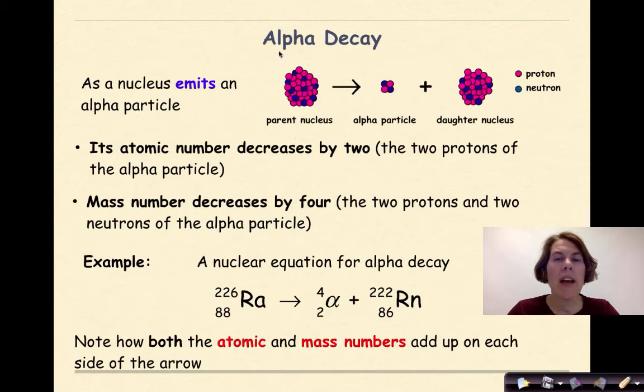Let's first talk about alpha decay. As a nucleus emits an alpha particle, its atomic number is going to decrease by two. In other words, two protons that were originally in our parent nucleus are now part of this released alpha particle.